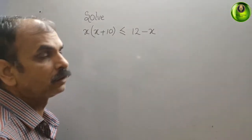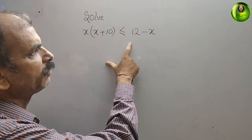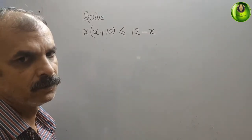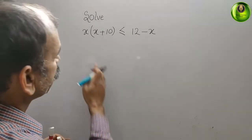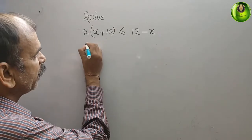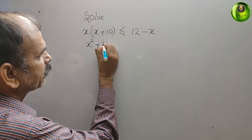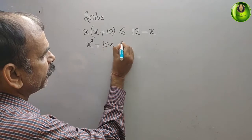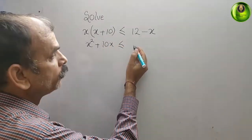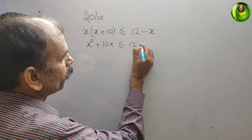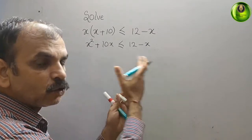The question is to solve: x(x+10) ≤ 12-x. First, expand it — x times x is x², and x times 10 is 10x, so you get x² + 10x less than equal to 12 minus x.